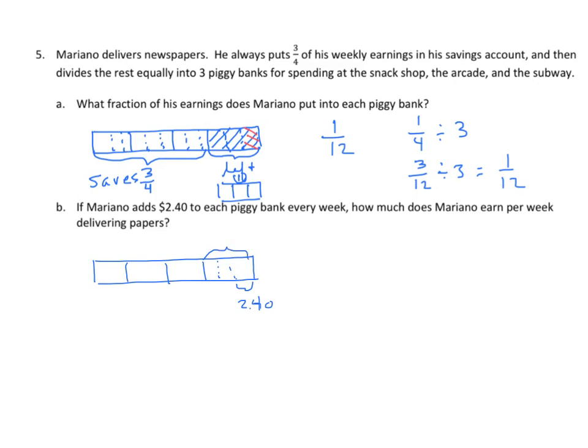So, I'm going to start with three times $2.40 to figure out what this one-fourth is. So, we multiply. Three times zero is zero. Three times four is twelve. Regroup the one. Three times two is six, plus one is $7.20.